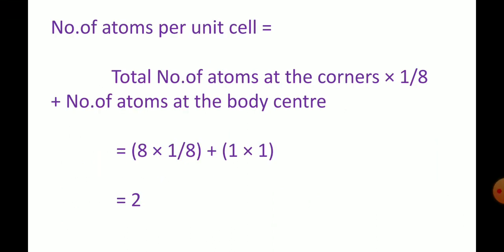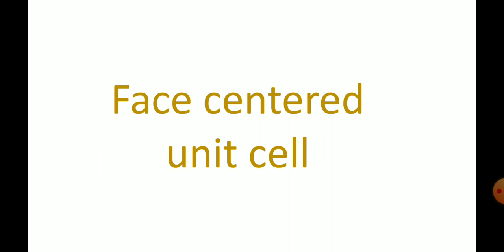The number of atoms per unit cell equals: total atoms at the corners — eight into one-eighth — plus atoms at the body center — one into one. That is eight into one-eighth plus one into one, which equals one plus one, equal to two. So the number of atoms per unit cell of a body centered cubic system is two.